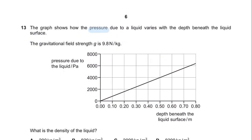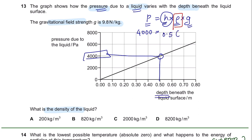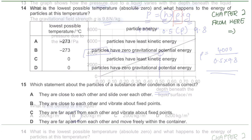Question 13. The graph shows how pressure due to a liquid varies with depth beneath the liquid surface. The gravitational field strength is 9.8 N/kg. Whenever asked about pressure due to liquid, remember the formula P = hρg, where h is height, ρ is density, and g is gravitational field strength. What is the density of the liquid? Taking pressure of 4000 Pa at depth 0.5 m: 4000 = 0.5 × ρ × 9.8. Rearranging gives a density of 820 kg/m³. So the answer is B.